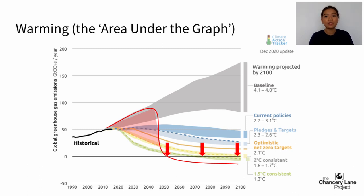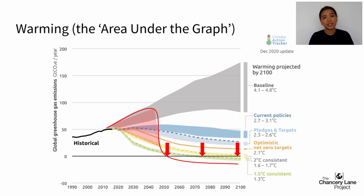The more we delay, the more emissions we generate in the meantime. We can reach net zero in 2050 and go far hotter than 1.5 degrees Celsius of warming — by continuing to emit as business as usual, having a huge realisation in 2040 and then pushing the throttle on decarbonisation. We'll have emitted much more than the alternative scenario of a steady staged decarbonisation, and all of these extra emissions would overshoot our carbon budget for 1.5 degrees Celsius of warming.